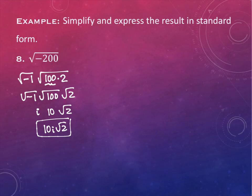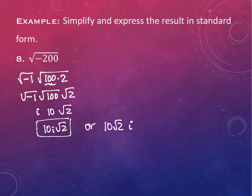We put the constant at the beginning, the i after the constant, and then any radicals following. So the answer is 10i√2. But again, MyMathLab might require a different format — just be paying attention to what it's telling you. If it's giving you an error and you know you did it right, the i placement might be the problem. We'll pick up on the next example next time.